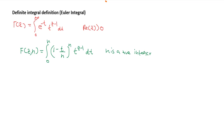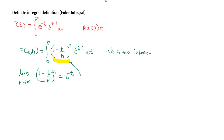We are considering this function f(z, n). If we take the limit as n goes to infinity, then (1 minus t over n) raised to n is equivalent to e raised to minus t. This is a well-known result, so we will not prove it here.